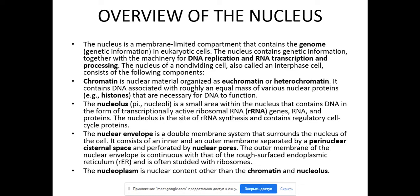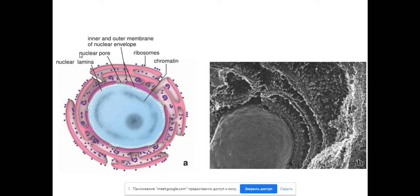The nucleus of non-dividing cells, also called interphase cells, consists of the following components. The nucleus is a double-enveloped membrane. In reality, we don't have a distinct nucleus-membrane structure — the nuclear envelope is very tightly bound with the endoplasmic reticulum, specifically the rough endoplasmic reticulum. We can claim that the endoplasmic reticulum is forming the nuclear envelope. We also have nuclear pores, which connect the cytoplasm with the nuclear components. The nuclear component is composed of chromatin, and there is also the nucleolus.